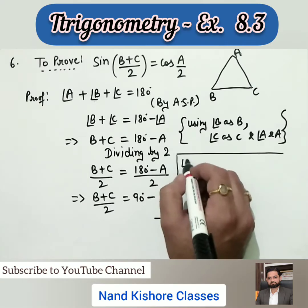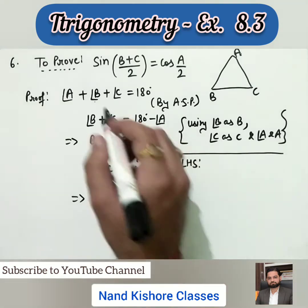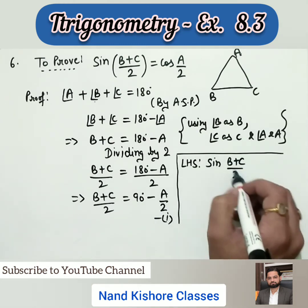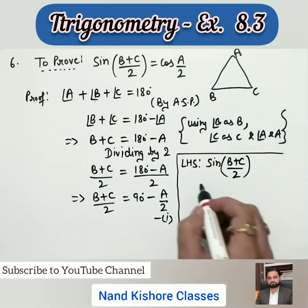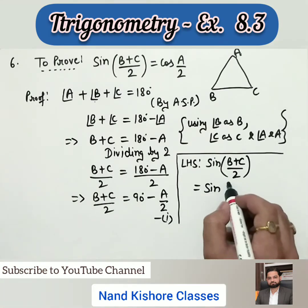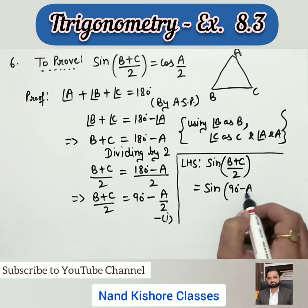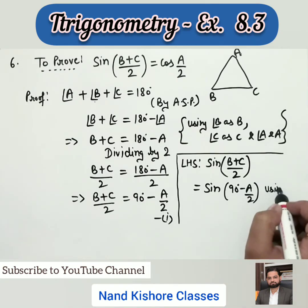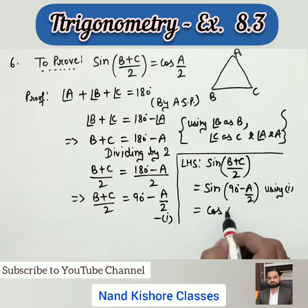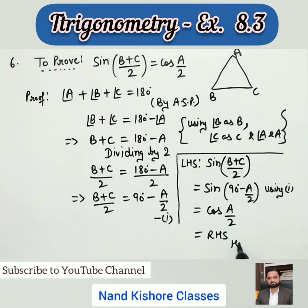Now taking the left side: sin((B + C)/2). Substituting the value of (B + C)/2 from the equation we derived, we write sin(90° - A/2). Using the identity sin(90° - θ) = cos(θ), this becomes cos(A/2), which equals our right side. Hence proved.